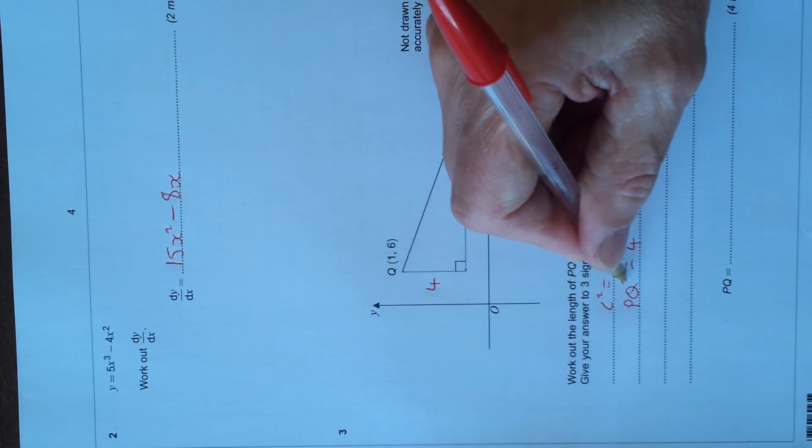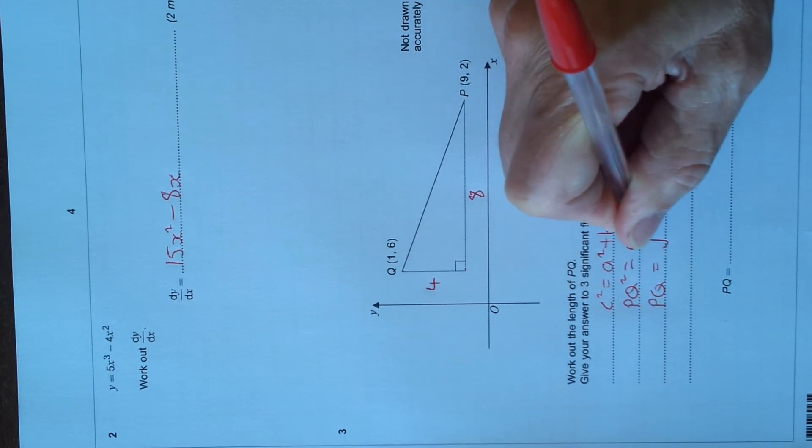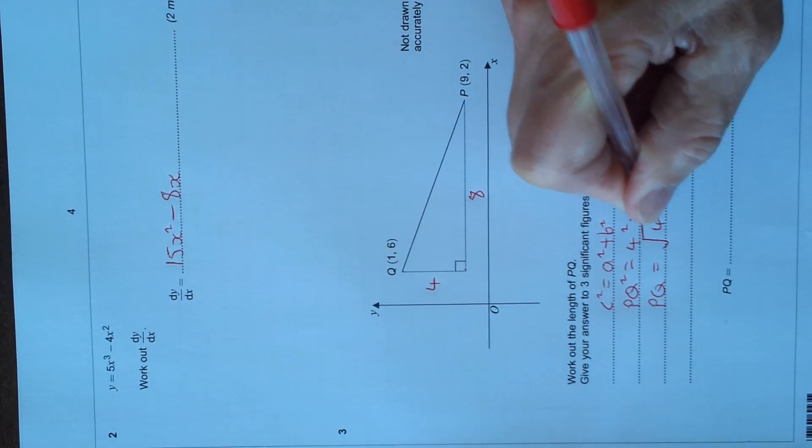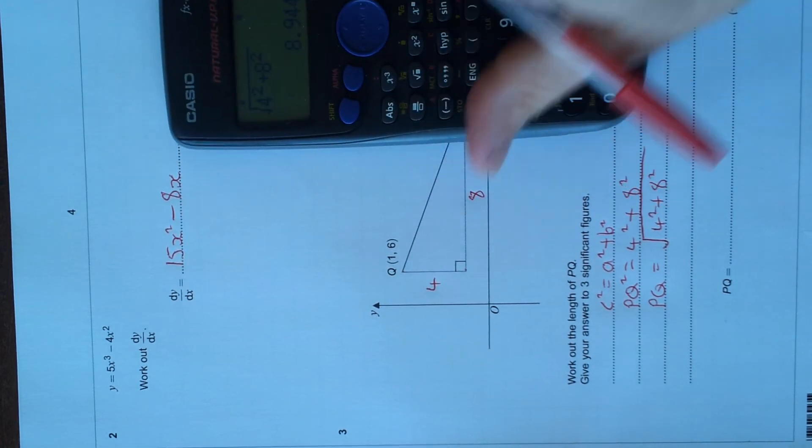The opposite of squaring is square root, so PQ on its own is the square root of 4² plus 8². And let's just put this in the calculator.